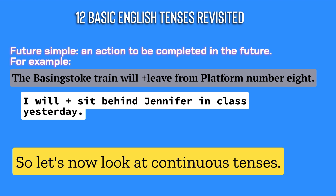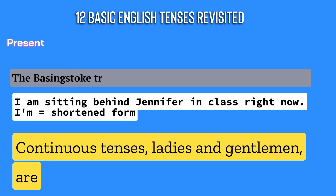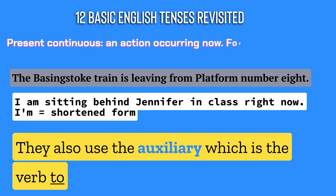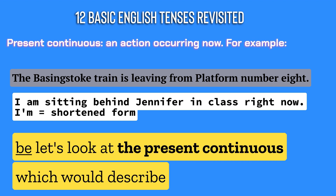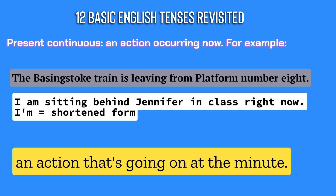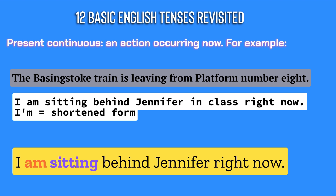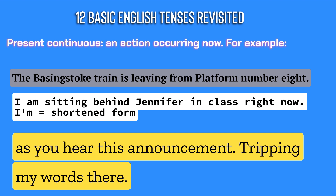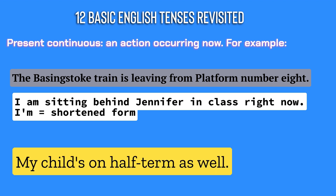So, let's now look at continuous tenses. Continuous tenses, ladies and gentlemen, are ones that have an '-ing' verb. They also use the auxiliary, which is the verb 'to be.' Let's look at the present continuous, which will describe an action that's going on at the minute. 'I am sitting behind Jennifer right now.' 'The business truck train is leaving from platform 10 as you hear this announcement.' I tripped my words there — it's been a long day, and my child's on half term.